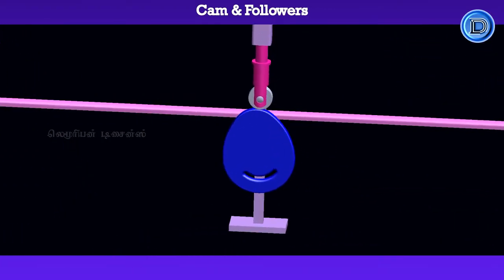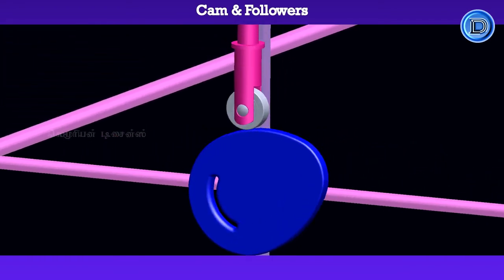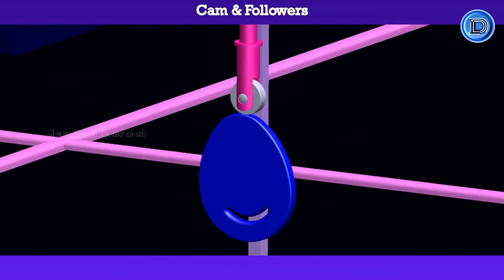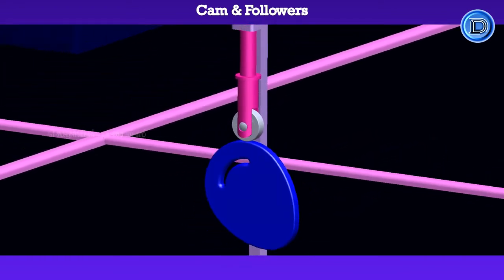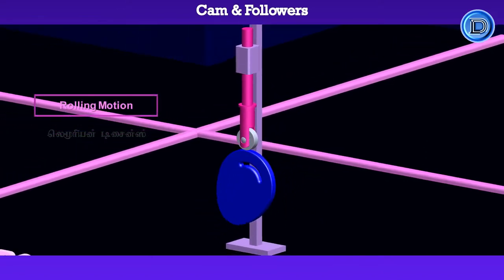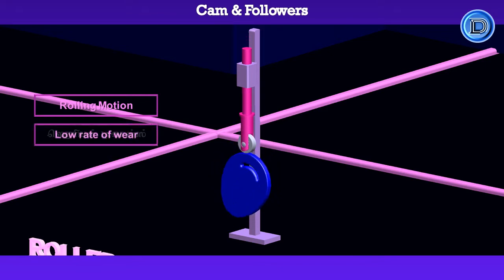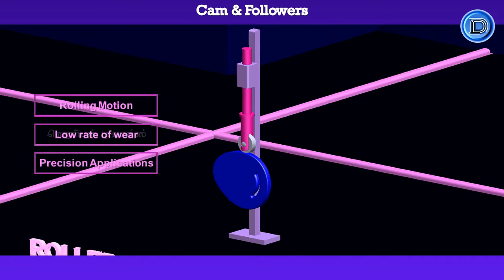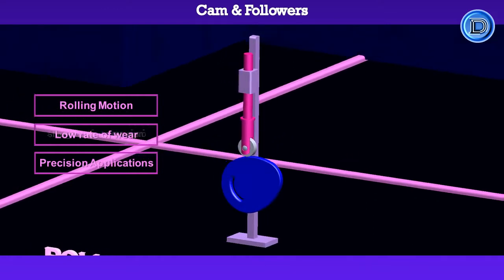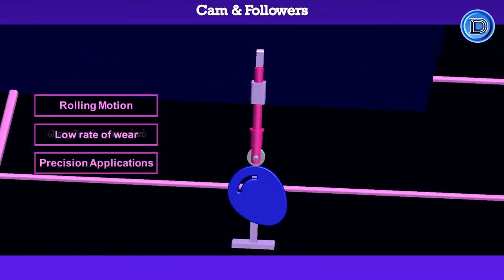This type of follower has a roller at the end which comes in contact with the cam. The motion between cam and follower is rolling motion. Due to the rolling motion between the contacting surfaces, the rate of wear is reduced. It is used in precision applications where timing is considered, and it can be operated at very high speeds.